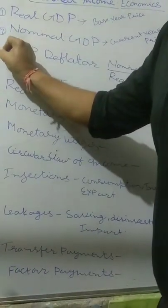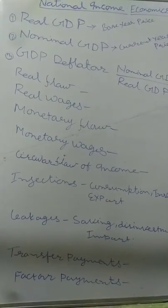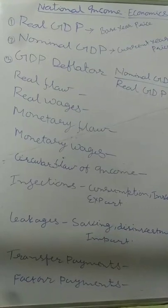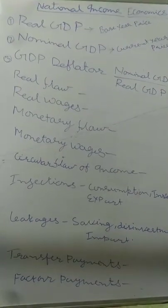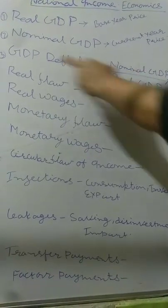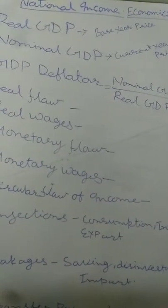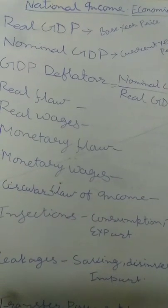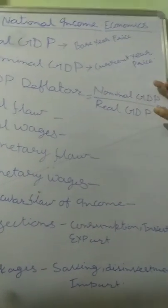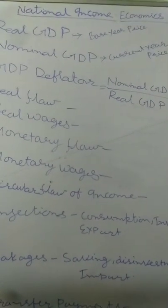Third, GDP Deflator. GDP Deflator indicates inflation in consumer goods, and it also states whether our economy is rising in terms of the previous year. It is calculated as: GDP Deflator = (Nominal GDP / Real GDP) × 100. This helps indicate the direction of inflation and whether the economy is rising, static, or decreasing.